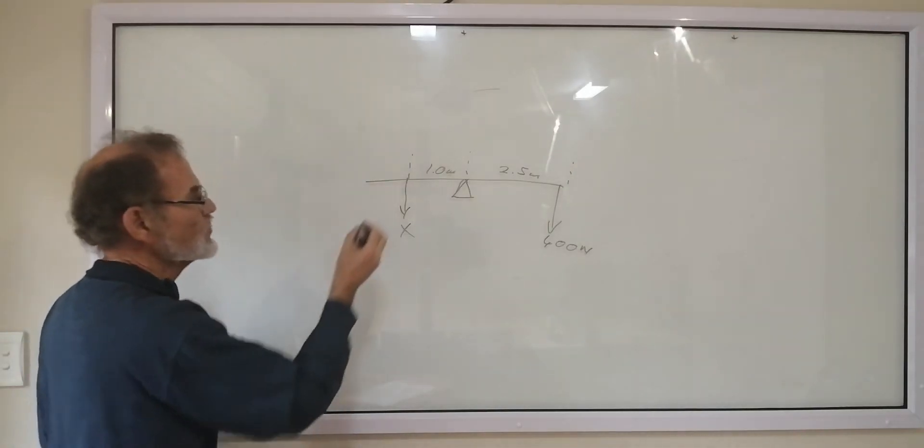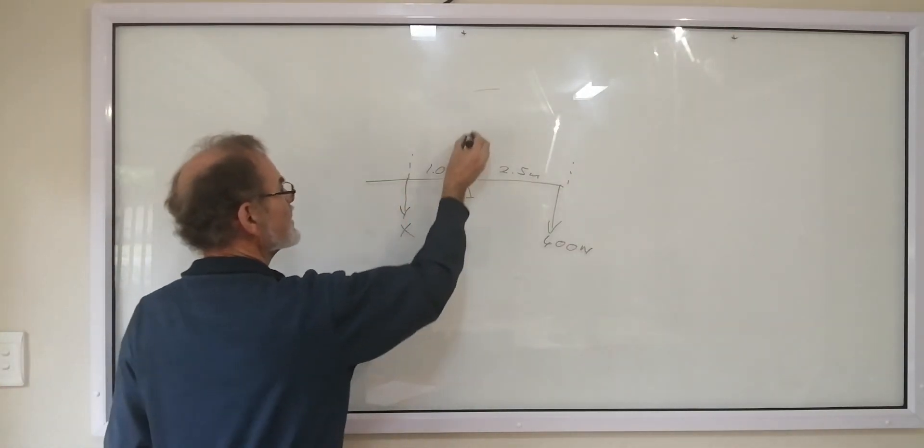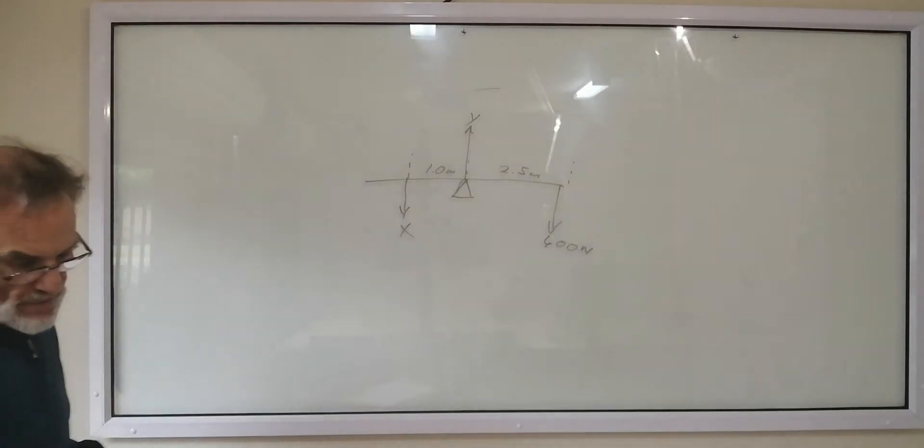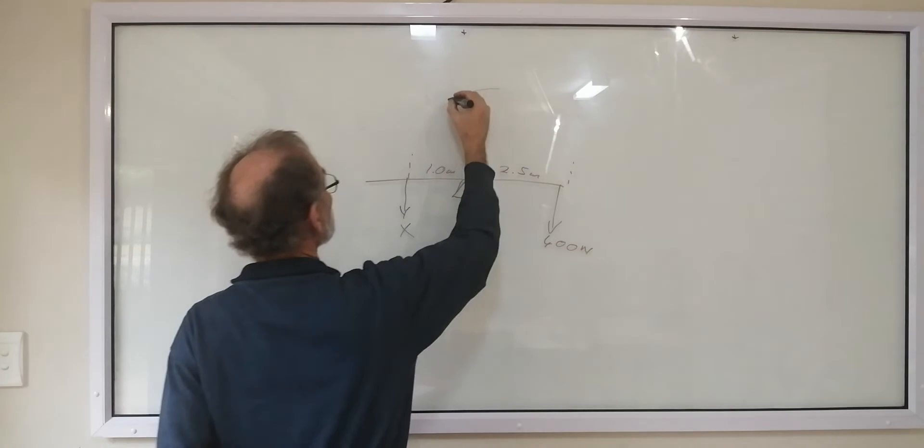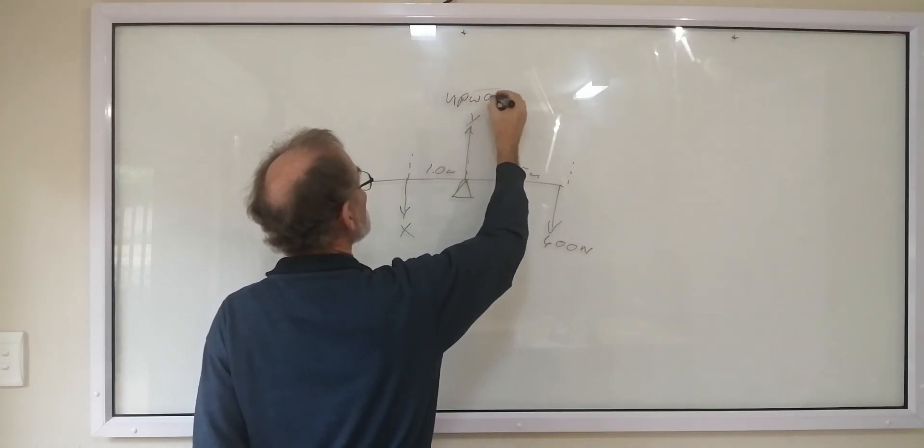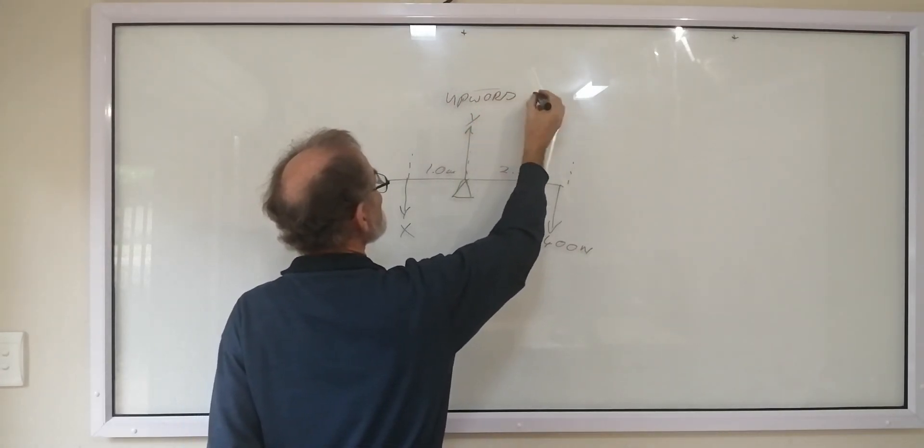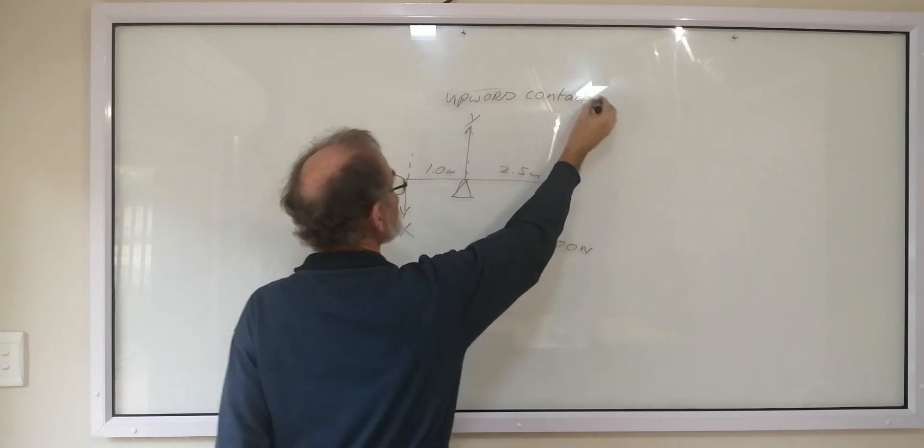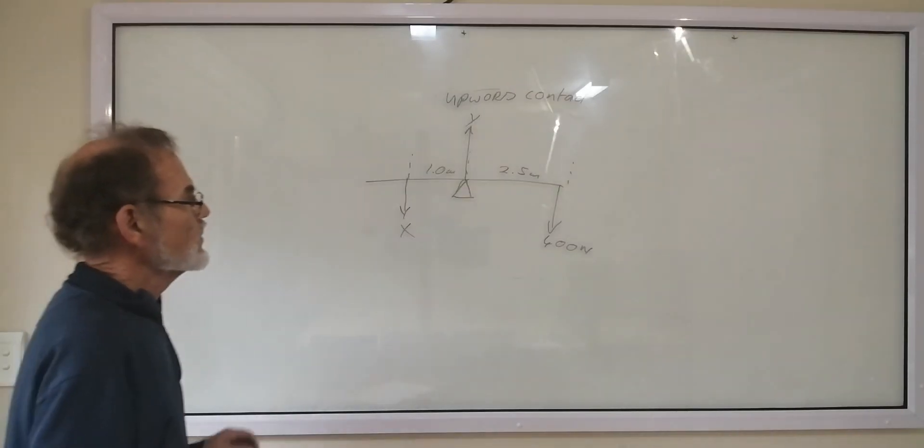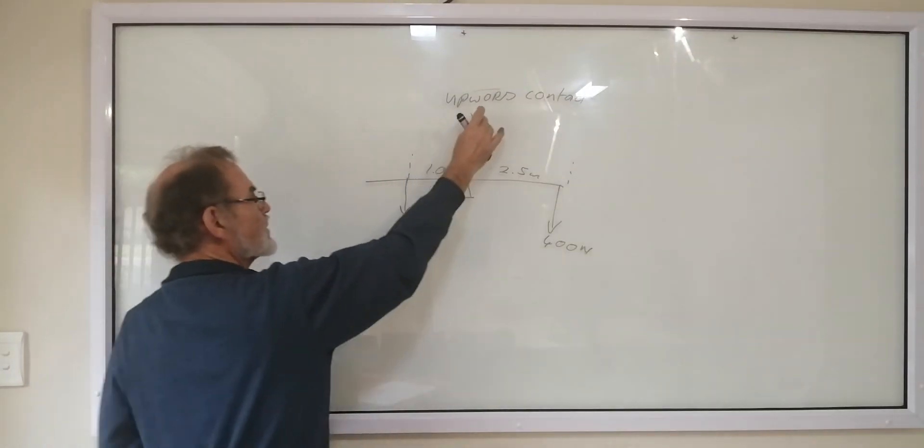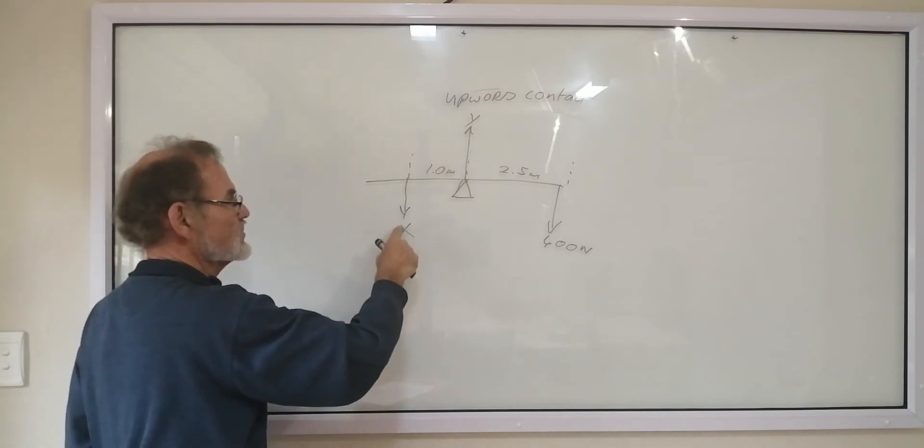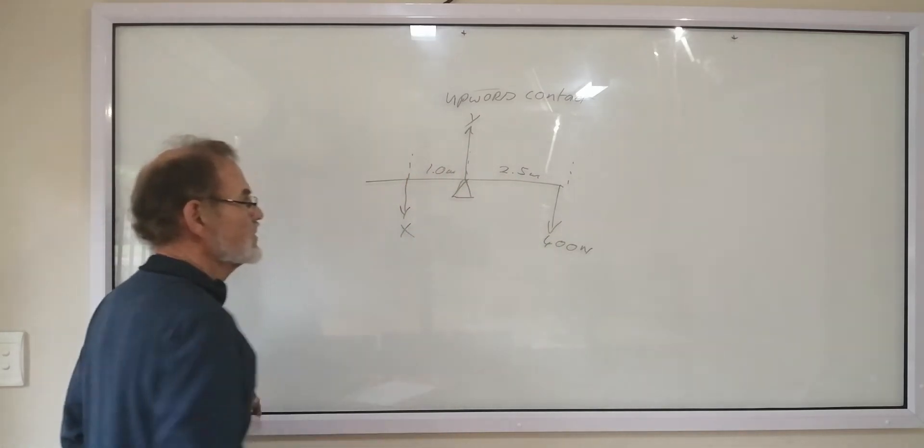And then they've got another force here, going up here, which they call Y. And this force they refer to as the upward contact force. Don't worry about this in the first part of the question. First calculate X using this information. Because this is the information that goes into the equation.